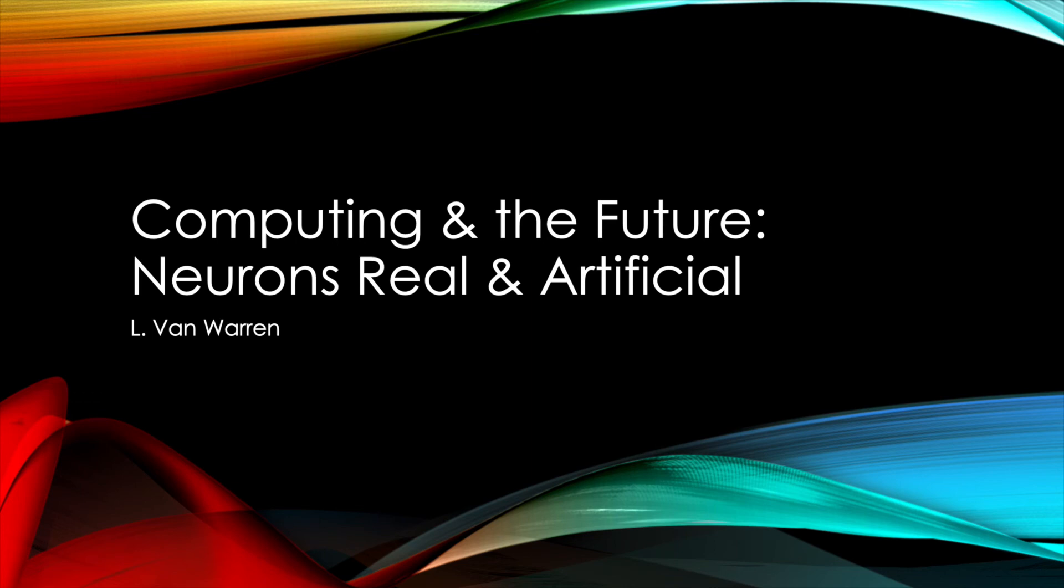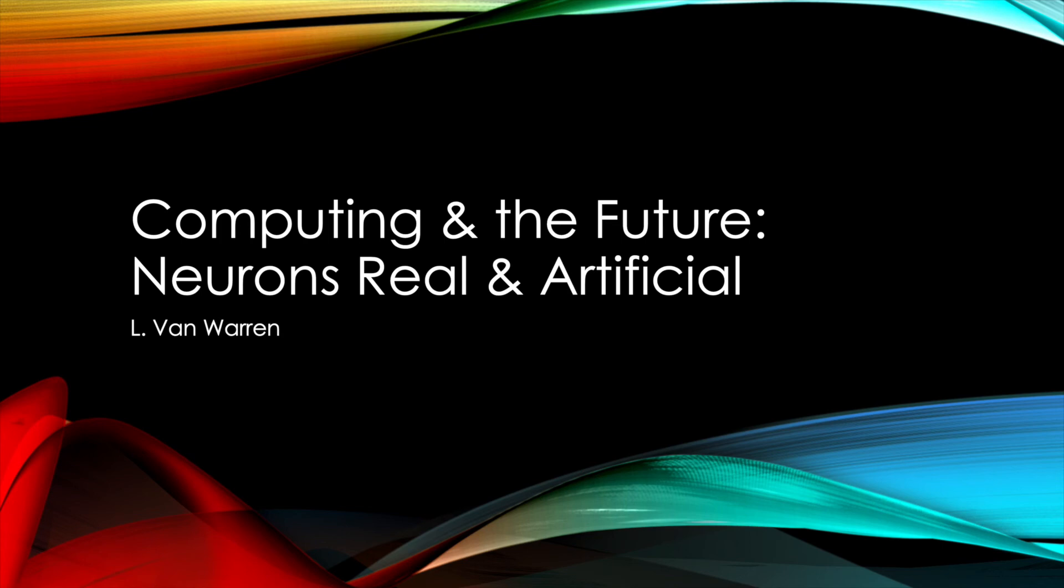So that's the end of my talk, first with real neurons and then with artificial neurons. And my intention was to try to bring these two ideas together in some novel way, but I thought it might be interesting to ask your opinion on how you might see the two ideas brought together in a novel way. And here's two starter questions: How would you combine real and artificial neural networks? And how would you combine TMS, this transcranial magnetic stimulation, and artificial neural nets?